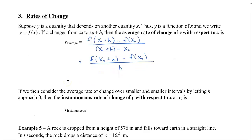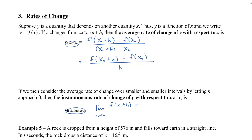Lastly, if we consider the average rate of change over smaller and smaller intervals and let H approach zero, we calculate the instantaneous rate of change of y with respect to x. It's the same formula, but with the limit as H approaches 0: the limit of F of x-naught plus H minus F of x-naught, all divided by H. Without the limit, we're only calculating the average; with the limit, we get the instantaneous rate of change.